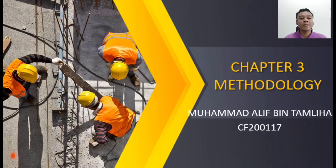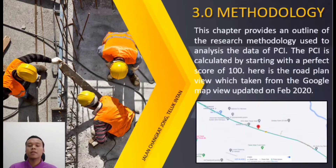My name is Muhammad Ali Bin Tamliha, and I am going to explain Chapter 3, which is methodology. This chapter provides an outline of the research methodology used to analyze the PCI data. The PCI is calculated by starting with a perfect score of 100. Here is the road plan view taken from Google Maps, updated February 2020.